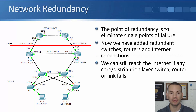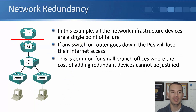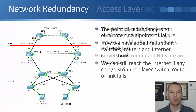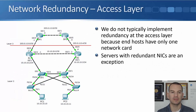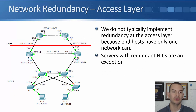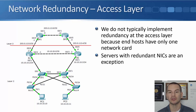Compare that with the first slide where if R1 or our core distribution layer switch went down, everything in the building loses connectivity. With the second example where we've built redundancy into the solution, we've got full redundancy on our service provider links, our WAN edge routers, and our core distribution layer switches.